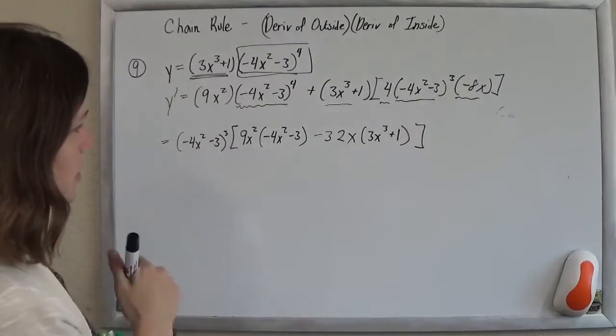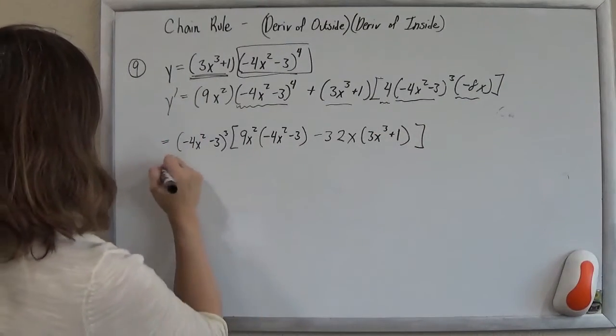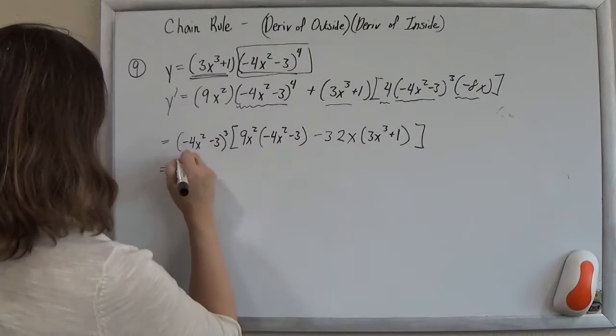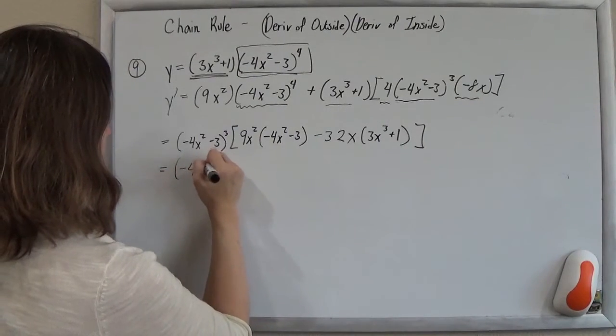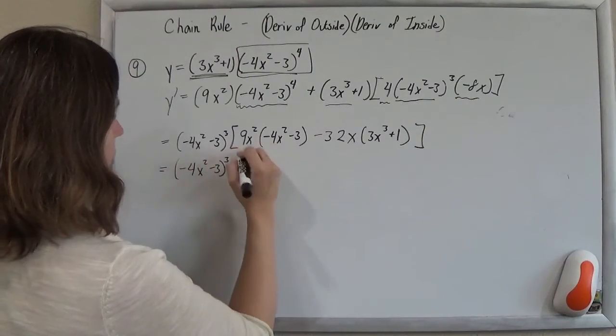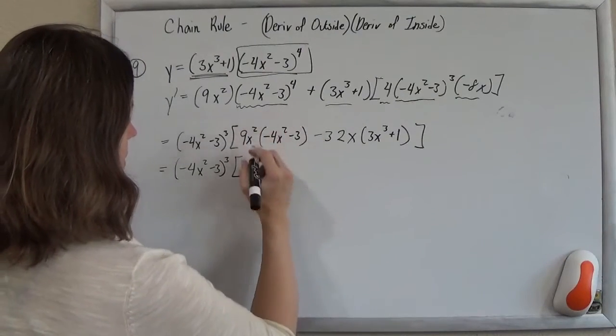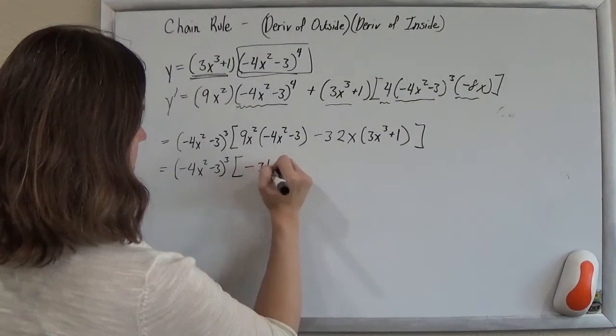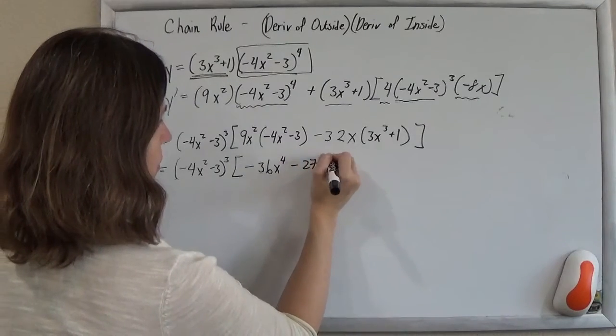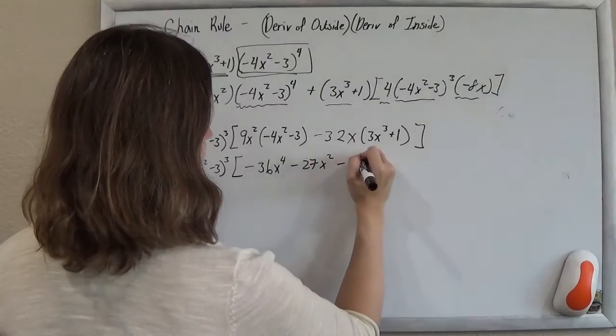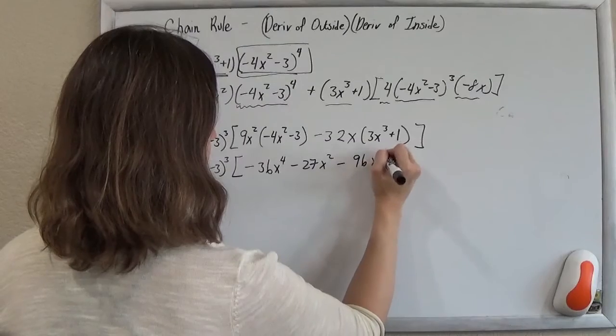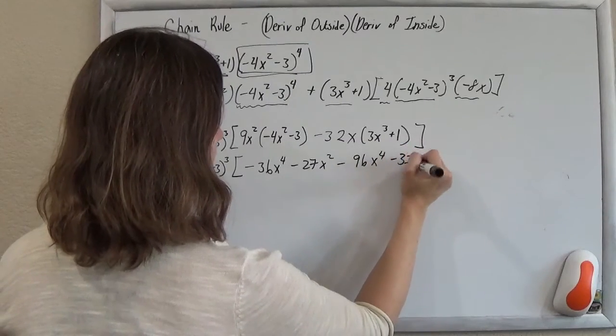Excellent. So now it's looking a little bit better. We'll just clean up this inside. So we have minus 4x squared minus 3 cubed.